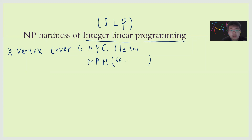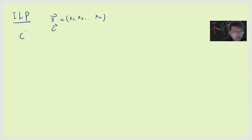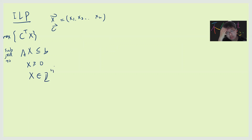Let me describe the ILP. Integer linear programming means you start from some x, which is an n-dimensional vector. There is a c vector, and the goal is to maximize c^T x, subject to Ax ≤ b and x ≥ 0, meaning every coordinate is non-negative and must be an integer. The idea is that you draw some convex polygon and you want to find the integer points on it.